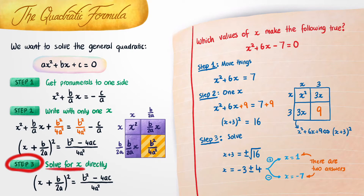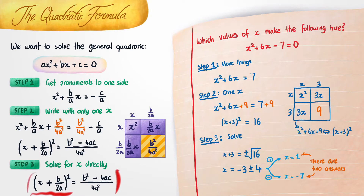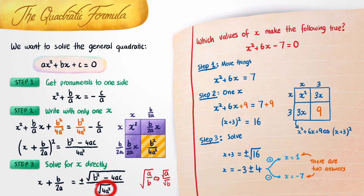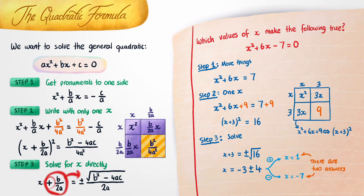In this third and final step, we just want to directly solve for x. To make x the subject of the left hand side, the first thing we do is square root both sides. But when we do that, we have to remember the plus minus on the right. We can simplify further by remembering that the square root of a on b is the same as the square root of a divided by the square root of b. Therefore, we put the square root on the top and on the bottom separately. The square root of 4a squared is the same thing as 2a, so we can rewrite that. And then as a final step, we take b on 2a to the right hand side — remembering this positive turns into a negative — and we arrive at the final formula.